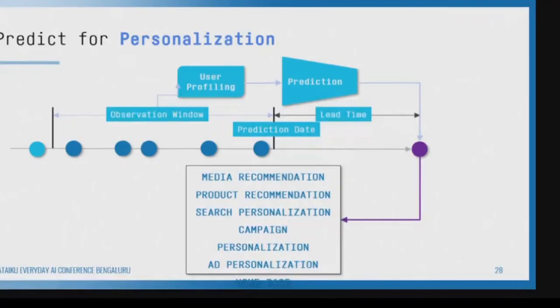The third reason we do prediction is to personalize everything. Will this person like this movie? Will this person buy this product at that time? We predict so that we can build ad engines, campaigns, cross-sell, upsell models. Can we personalize education — can a student solve this problem, so I can give it to him now? That is also prediction.